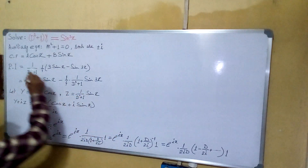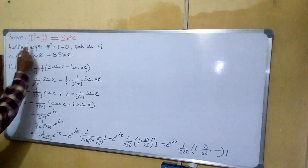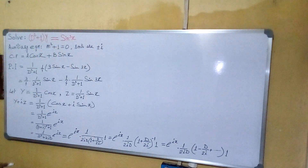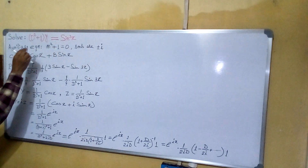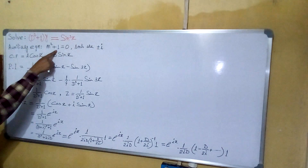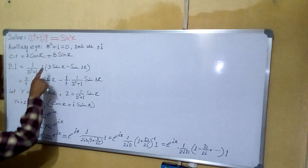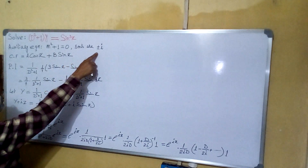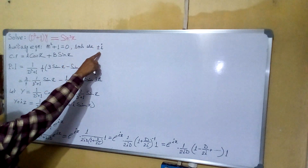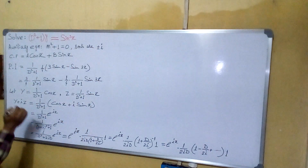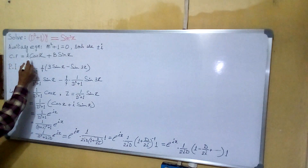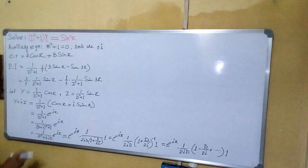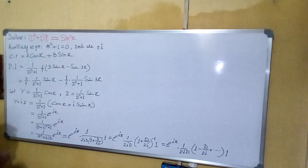Welcome. We have to solve (D² + 1)y = sin³x. The auxiliary equation is m² + 1 = 0, so m² = −1, giving m = ±i. The roots are ±i. Hence the complementary function is A cos x + B sin x. Now we find the particular integral.